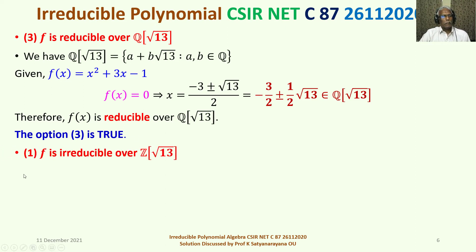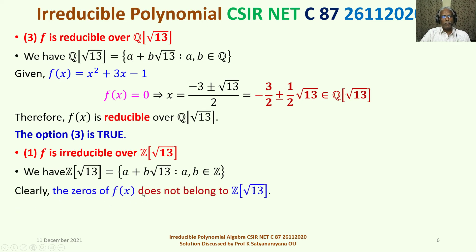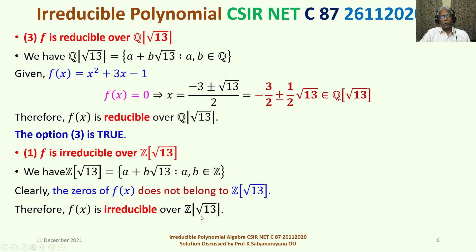Now consider the statement under Option 1: f is irreducible over Z(√13). We have Z(√13) is an integral domain equal to the set of all a + b√13 where a, b belong to Z. Clearly the zeros of f(x) do not belong to Z(√13), because −3/2 is not an integer, and ±1/2 is not an integer. Therefore these are not elements of Z(√13), so the zeros of f(x) do not belong to Z(√13). Therefore f(x) is irreducible over Z(√13), and Option 1 is true.